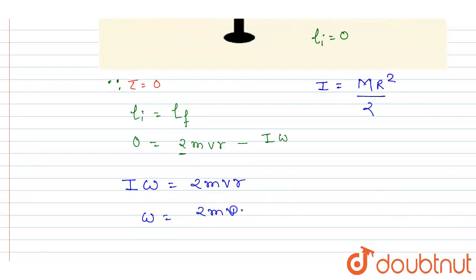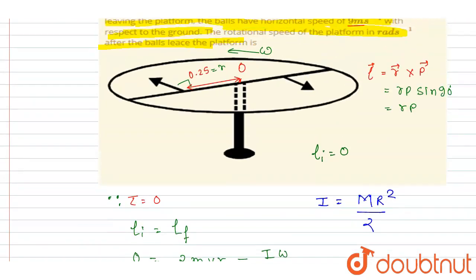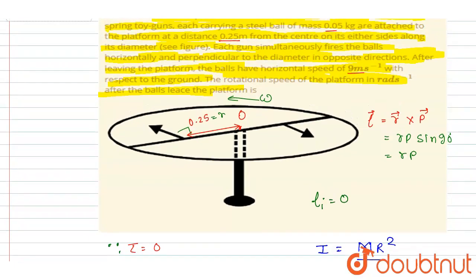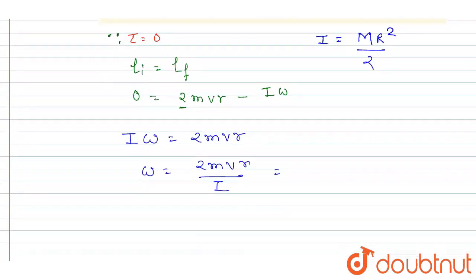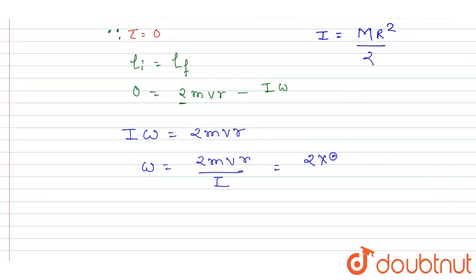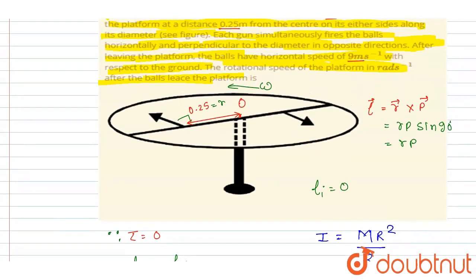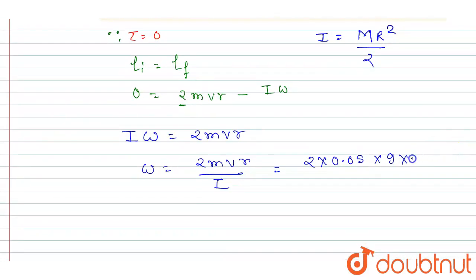Just start putting the values here. So if you see, m is 0.05 kg, r is 0.25 m, and velocity is 9 m/s. If you see here, r is 0.25 m.